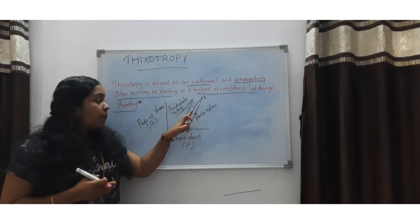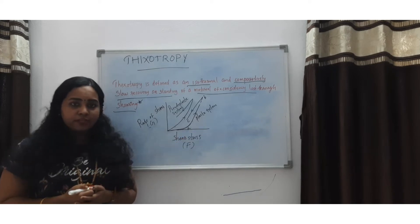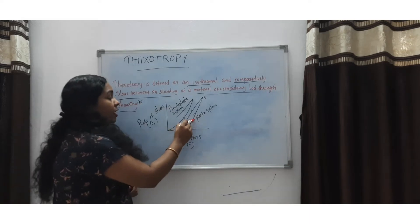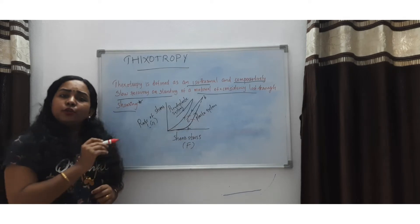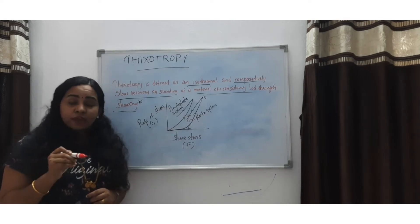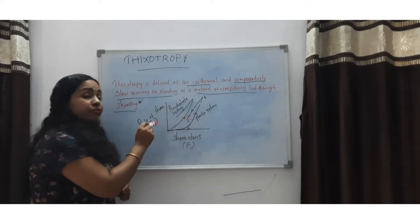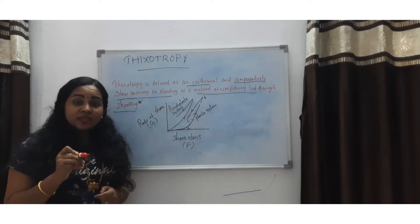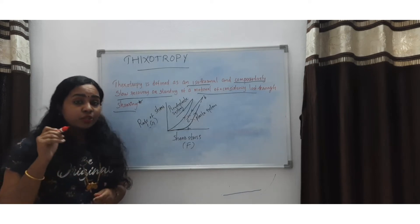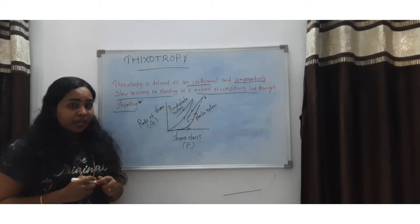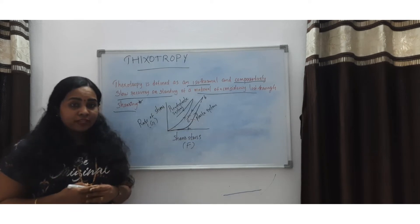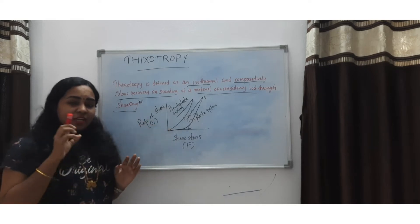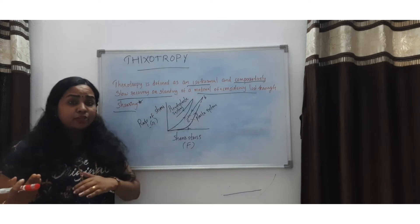This is a rheogram for a plastic system. In non-Newtonian fluids, the down curve is frequently displaced to the left of the up curve. This figure shows that the down curve has lower consistency at one rate of shear compared to what it had on the up curve.